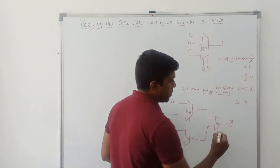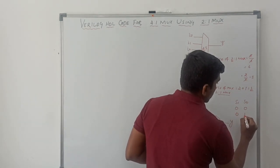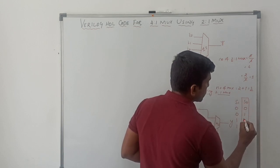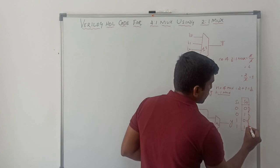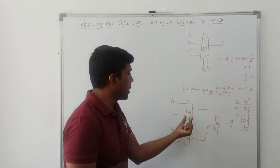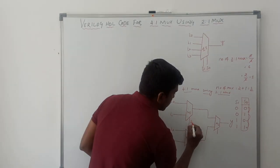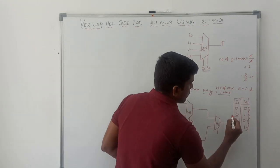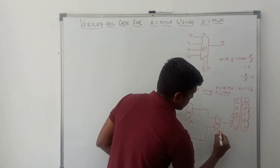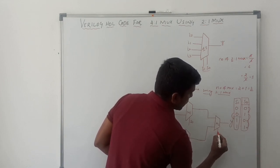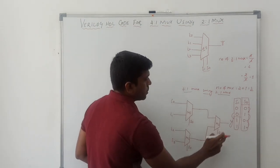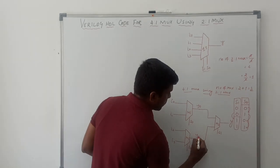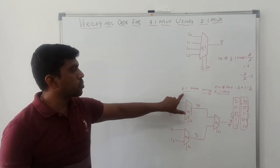These 2 selection lines make 4 combinations: 00, 01, 10, 11. In these 2 selection lines, S0 is frequently changing its value — 0 to 1, 1 to 0, 0 to 1. This frequently changing input is connected to the beginning of the structure, so S0 connects to M1 and M2. S1 has only one change — 0 then 1 — so this minimum-changing input is connected close to the output. S1 is connected to M3. The structure also has 2 wire signals: Y0 and Y1.